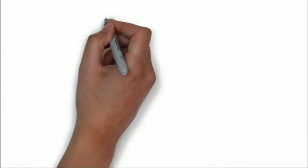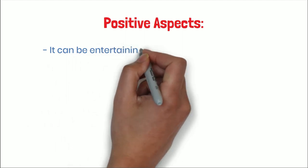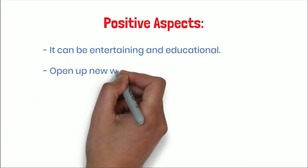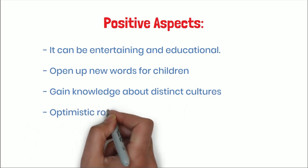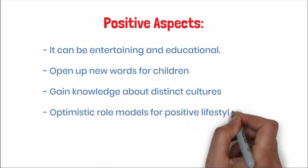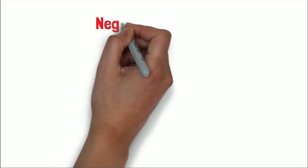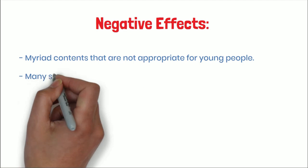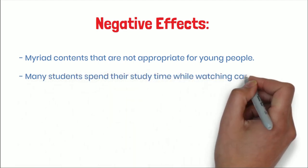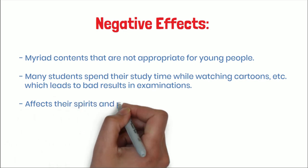Number five: TV — television, monitor. Now we start with positive aspects: it can be entertaining and educational, open up new worlds for children, gain knowledge about distinct cultures, provide optimistic role models for a positive lifestyle, and teach how to use all modern technologies in order to succeed. Moving to the negative effects: content that is not appropriate for young people, many students spend their study time watching cartoons, which leads to bad results in examinations, and it affects their spirits and physical strength.